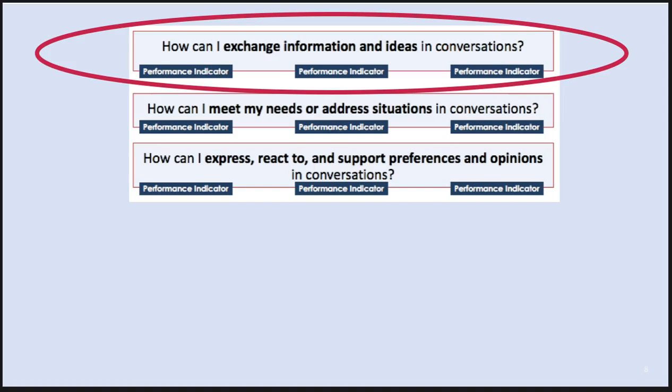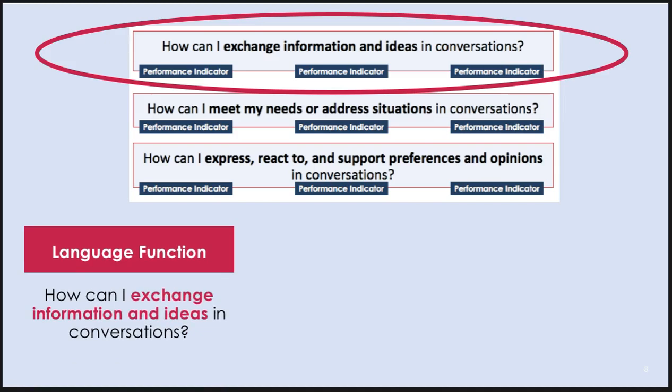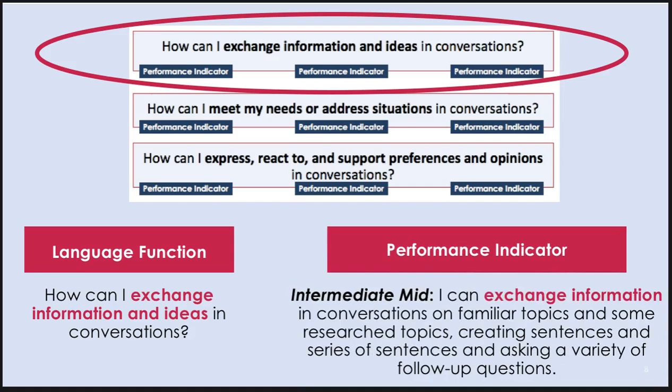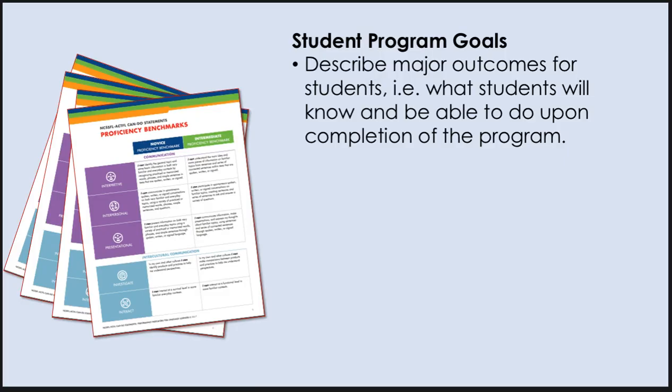The sample shown here from the model curriculum, Let's Go Somewhere, is for grades 6–12. The mode of communication is interpersonal, as evidenced by the language function requiring that learners exchange information and ideas in conversation. The performance indicator is intermediate-mid, and the text that appears here comes directly from the can-do statement document. The indicator gives the anticipated level of performance by explaining how well learners will accomplish the task, keeping the language function of exchanging information and ideas in mind. Along with the performance indicator of intermediate-mid, the program can-do statement and the corresponding assessment task can be developed.